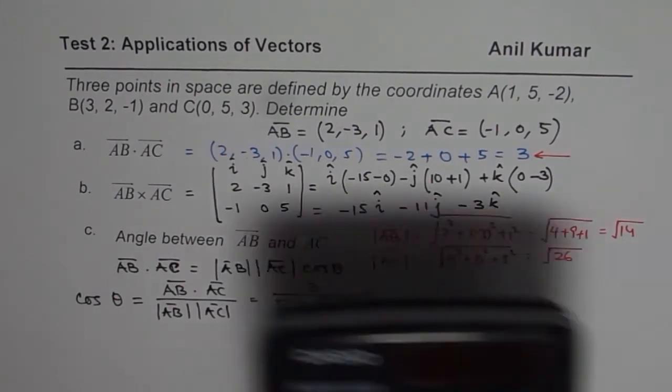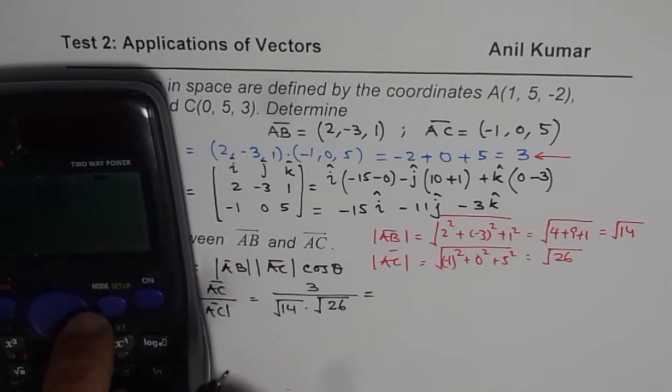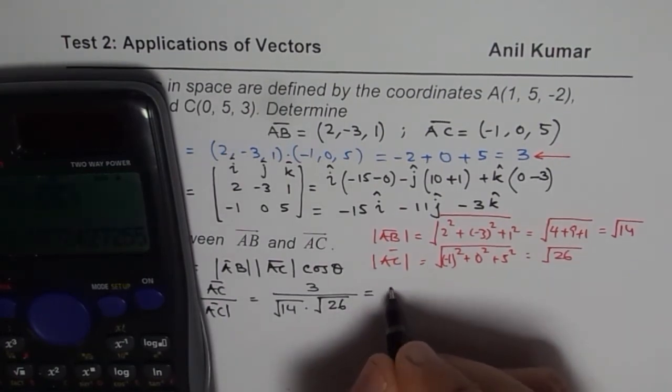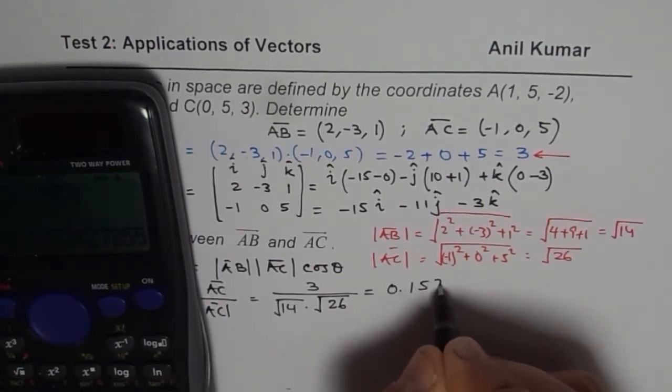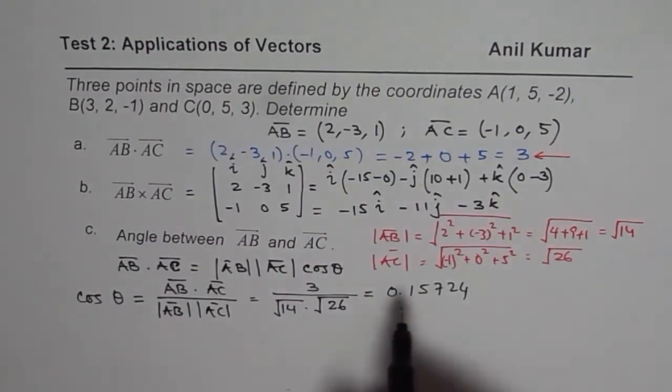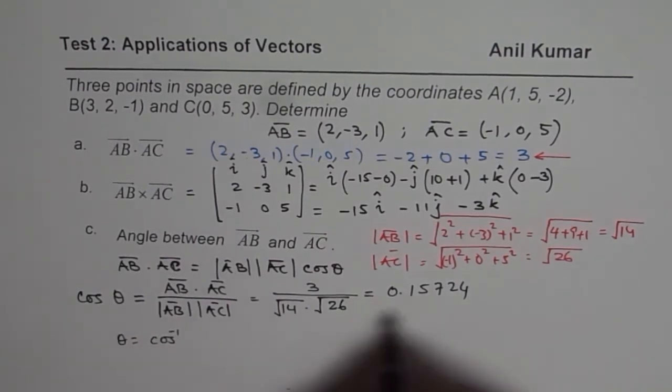So that is equals to, we can use the calculator, so we have 3 divided by, within bracket, square root of 14 times square root of 26, which is equals to 0.15724. So 4 decimal places is good enough. So from here we can say theta equals to cos inverse of this number.